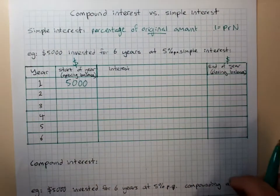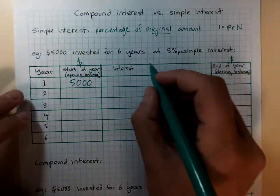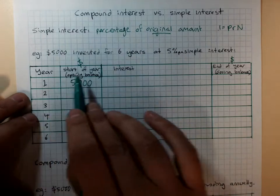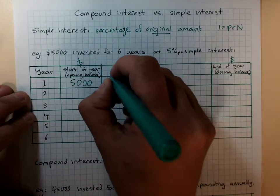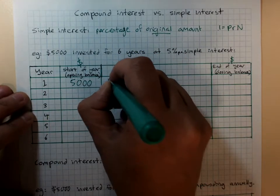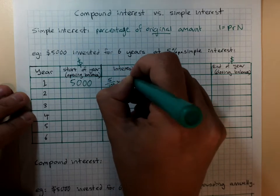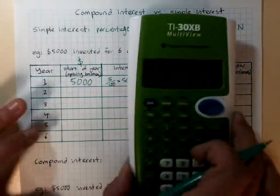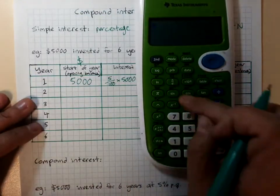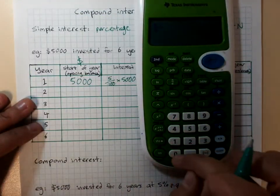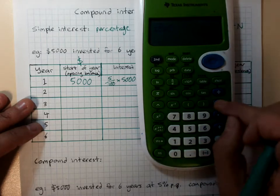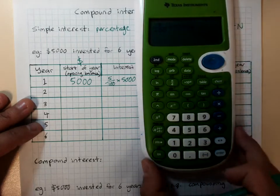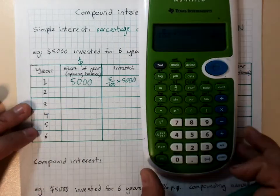The amount of interest we earn would be 5%, 5 over 100, of $5,000. We'd use our calculator for that. So, 5 over 100 times $5,000, $250.